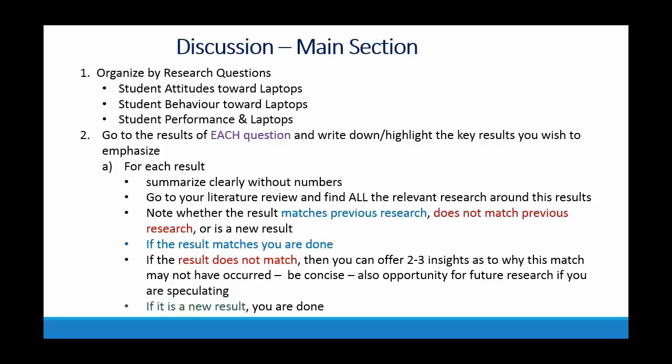There are several parts to a discussion, but I want to focus here on the main section where you discuss the results and link them to previous literature. The first thing you have to do is organize everything by research questions. You should have organized your literature review by research question, your results by research questions, and you organize the discussion by research questions. The main purpose of the article or your paper is to answer research questions.